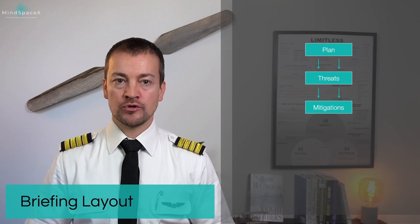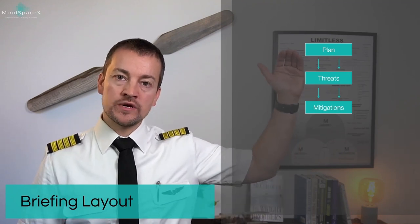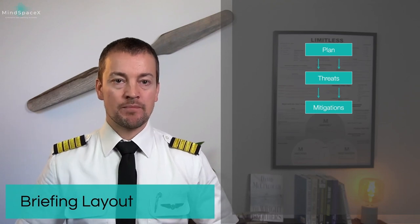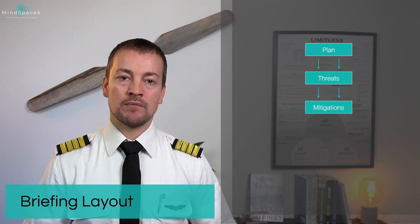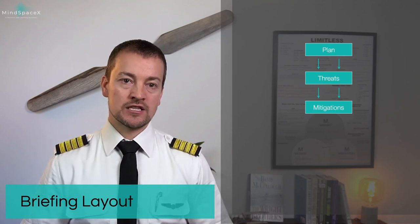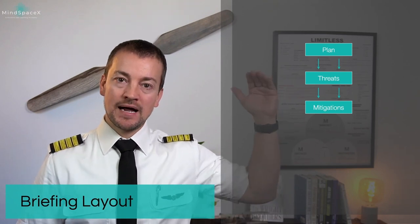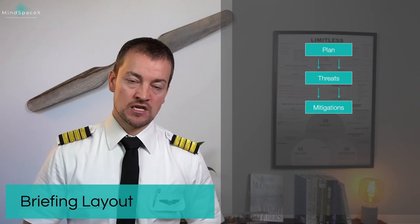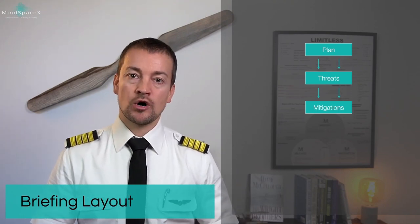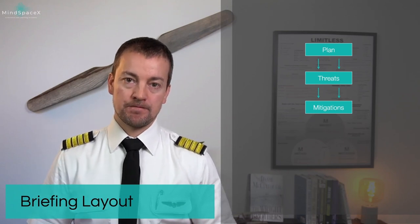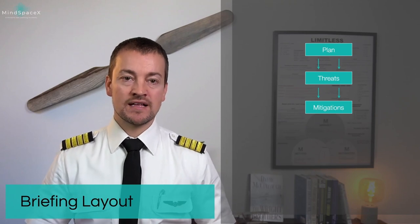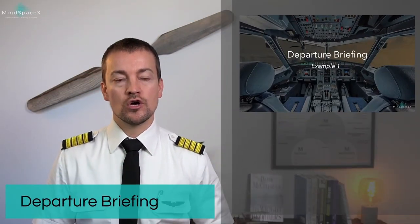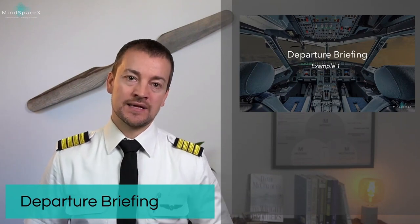We follow the same layout for both the departure and the arrival briefings. We start always with the plan. PM will start by talking about the planned intention, then the pilot flying will complement the plan, talking about his or her plan to execute the intention. Then the pilot monitoring will state the threats, followed by the pilot flying adding his or her input. This is done through identifying and mitigating threats and errors. Let's jump into the cockpit to see how a professional crew performs the briefing.